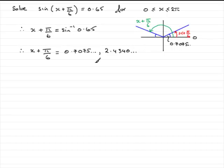Now all that's left to do is subtract pi upon 6 from both these answers and it will give us what x is. So if you do that, 0.7075, take away pi upon 6, you'll end up with 0.1839 and so on.